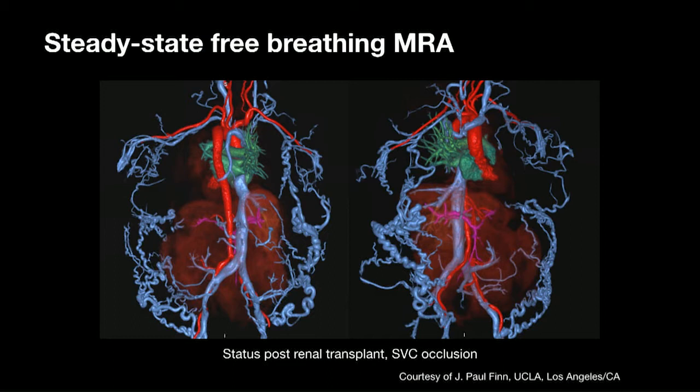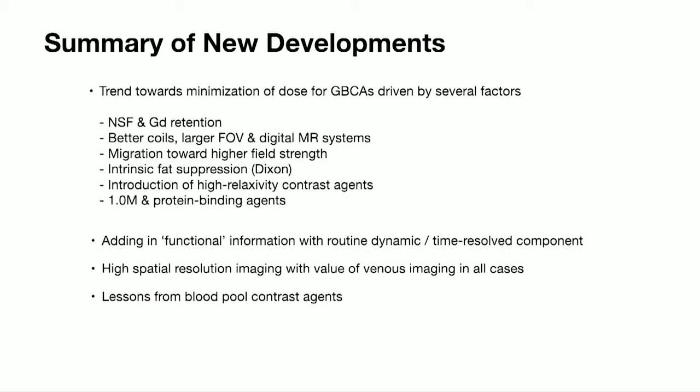In summary, although there is some concern about NSF and gadolinium retention issues, that's driven us to reduce the amount of contrast we need to use. Using things like fat suppression and parallel imaging means we can use lower amounts of gadolinium-based contrast. We tend to add functional information to virtually all our examinations using a dynamic or time-resolved component, and we use high spatial resolution imaging to get venous imaging that our surgeons are increasingly relying on.